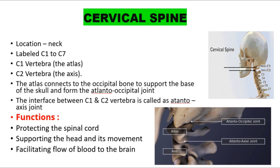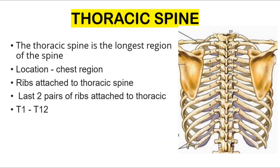The joint between the skull and atlas is called the atlanto-occipital joint, and between C1 and C2 it is called the atlanto-axial joint. The cervical spine helps in the protection of the spinal cord, supporting the head and its movement, and facilitating the flow of blood to the brain.